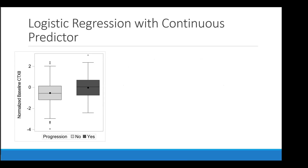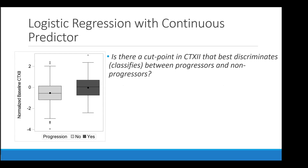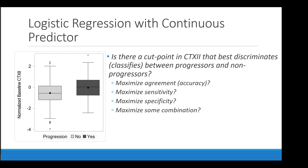Instead of assessing a linear relationship, we might ask: is there a cut point in CTX-2 that best discriminates between progressors and non-progressors? Where we make the cut depends on what we want to optimize — accuracy, sensitivity, specificity, or some combination. This is important because it will come up later in machine learning methods: what exactly do you want to maximize in terms of your model fit?